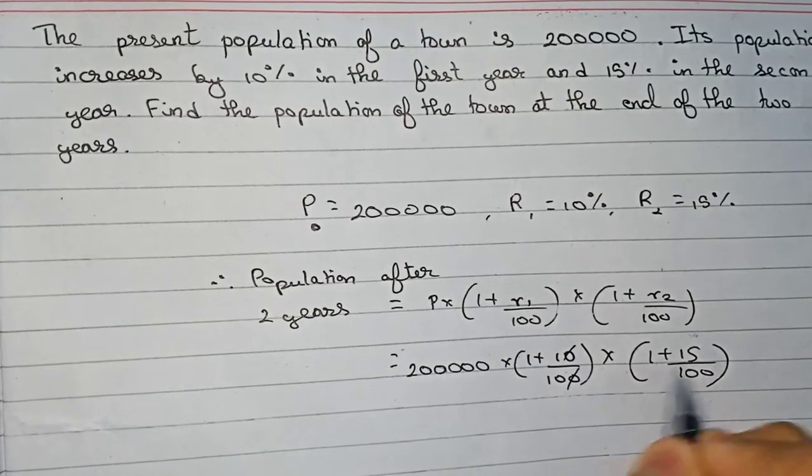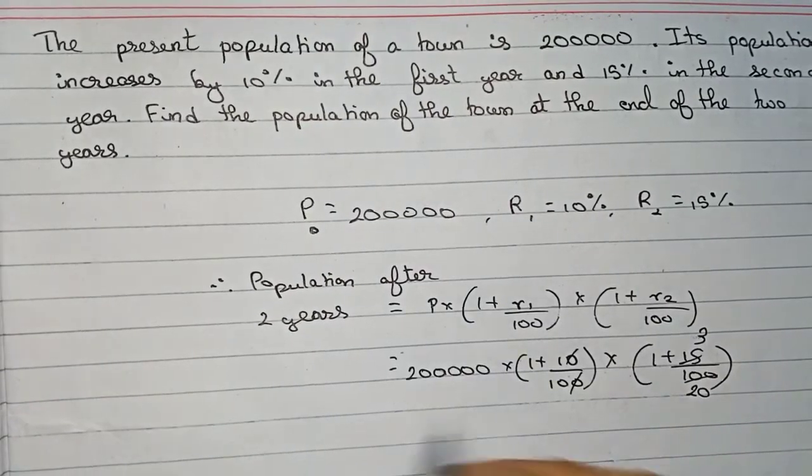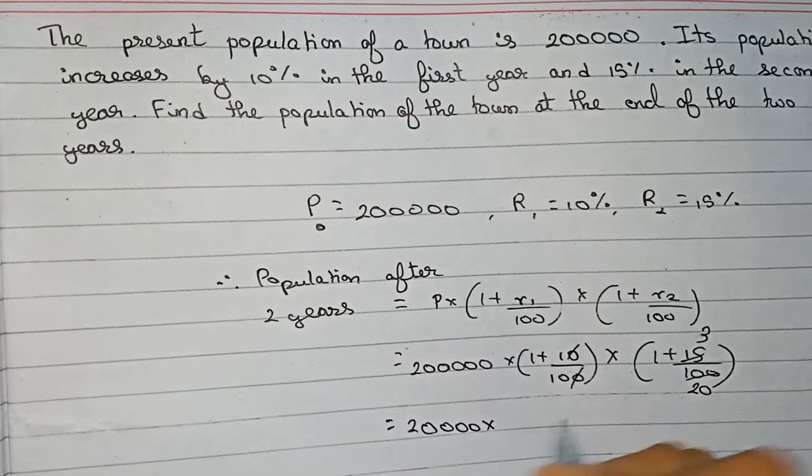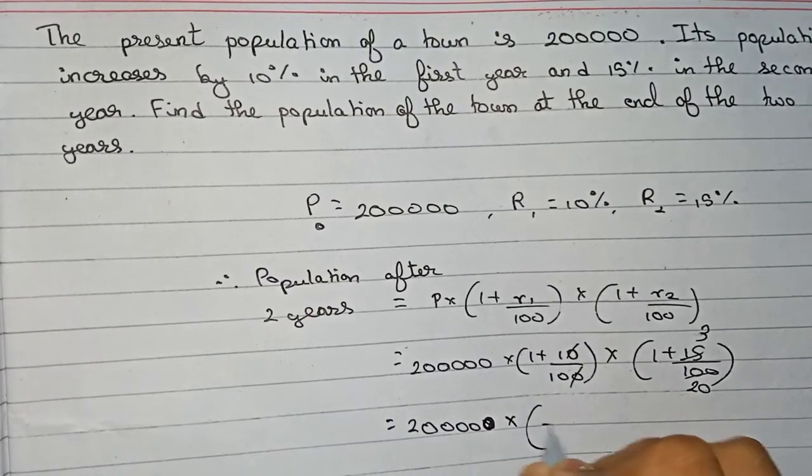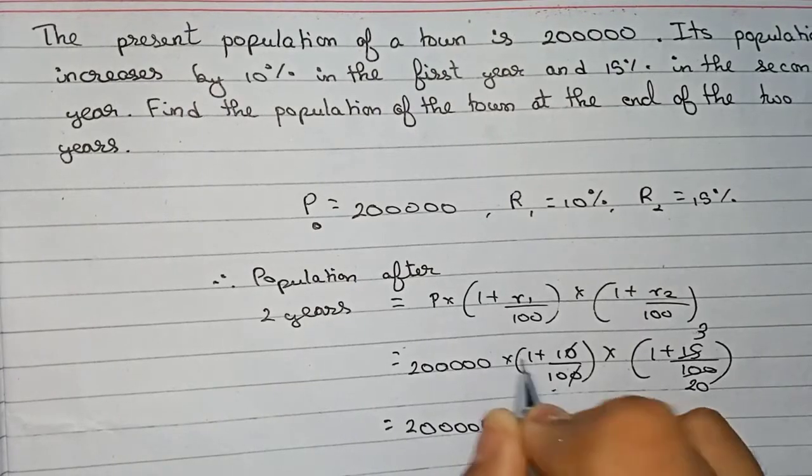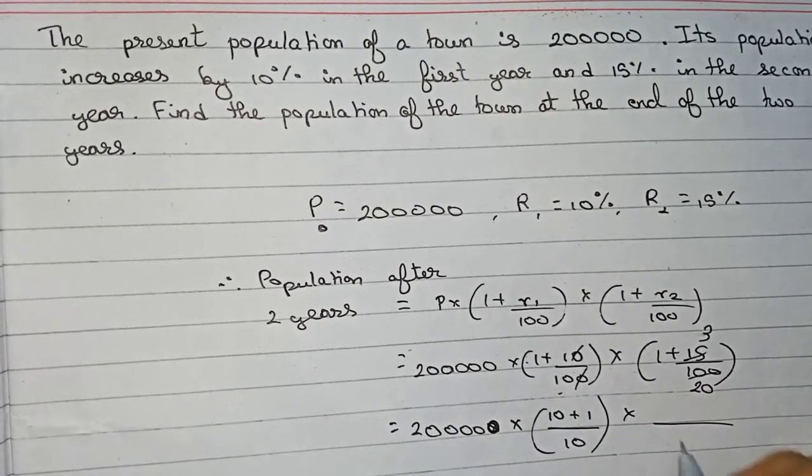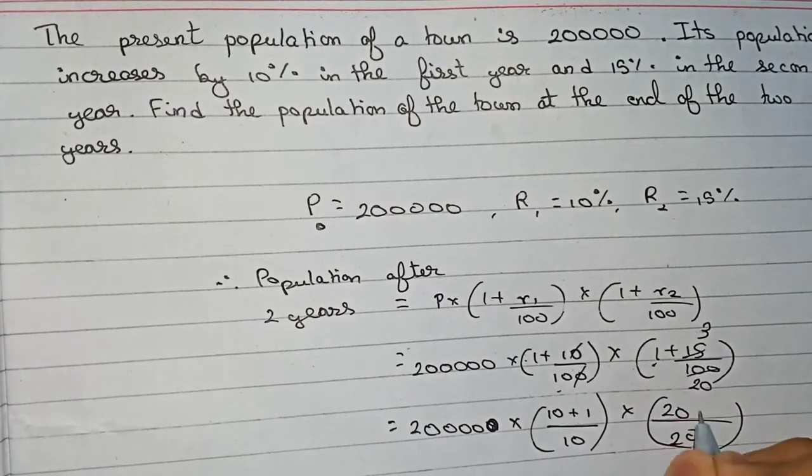So here we cut 1 and 1, and here we cut by 5: it becomes 3 and it becomes 20. So now 2 lakh into... Take 10 as the denominator, so 10 times 1 is 10 plus 1. And here, take 20 as the denominator, so 20 times 1 is 20 plus 3.